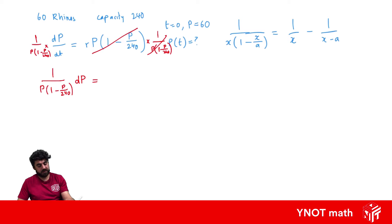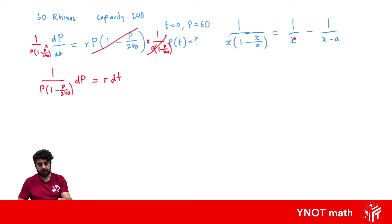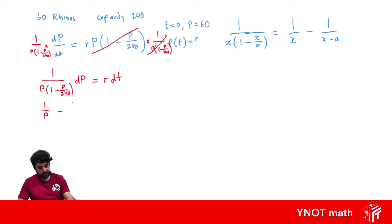We also multiply both sides by dt, so we get r dt on the right-hand side. We were given the partial fraction identity, and we can see that p equals x and a equals 240. So we can rewrite the fraction as 1 over p minus 1 over p minus 240, all times dp, and this equals r dt.